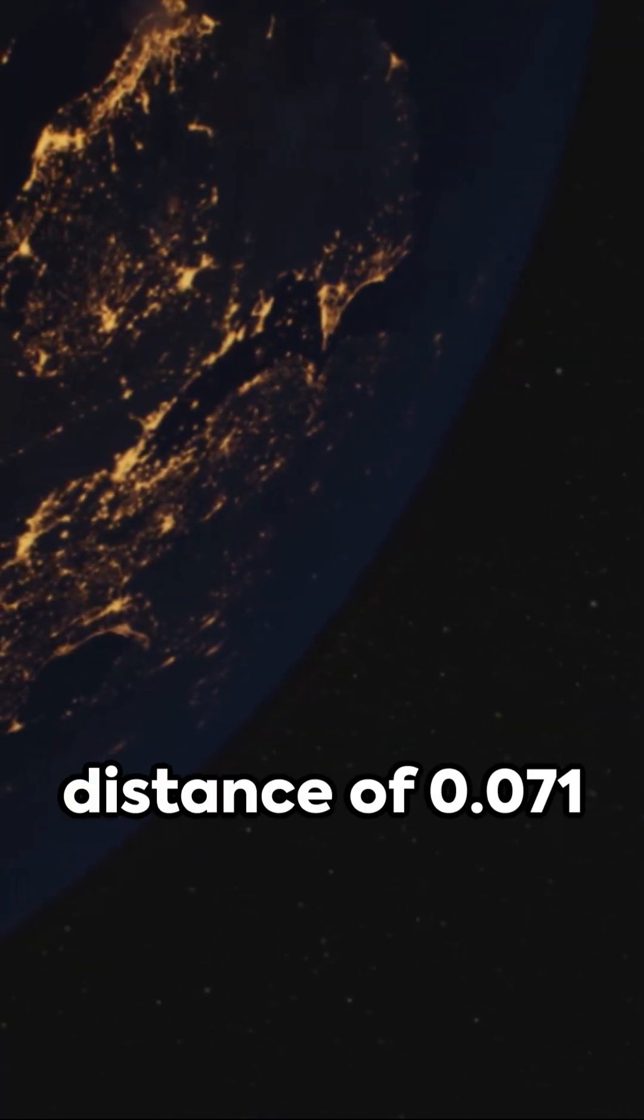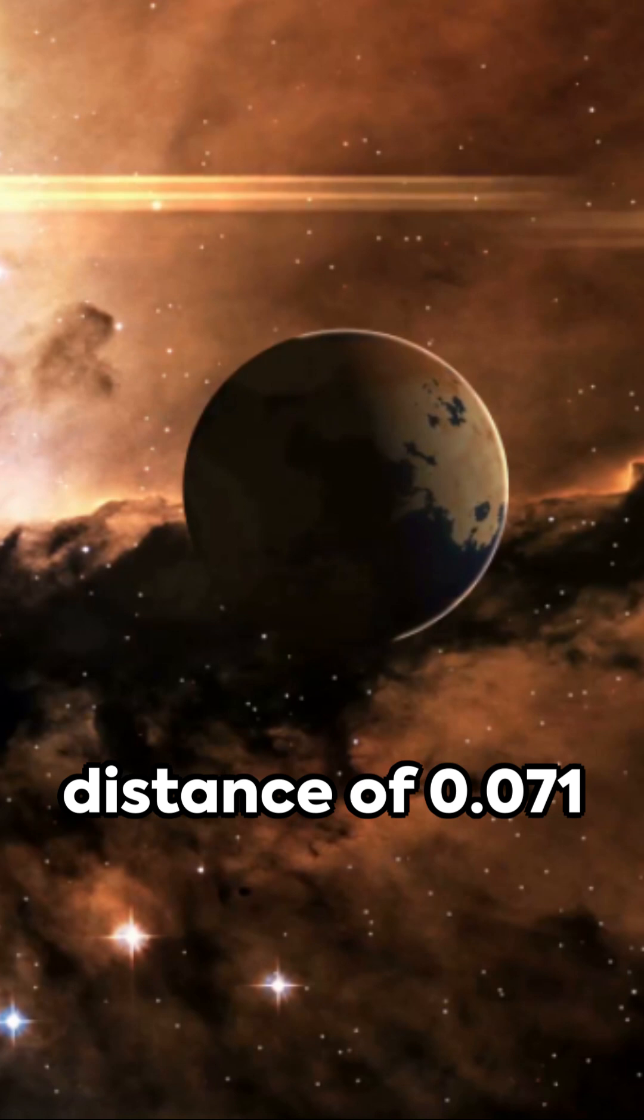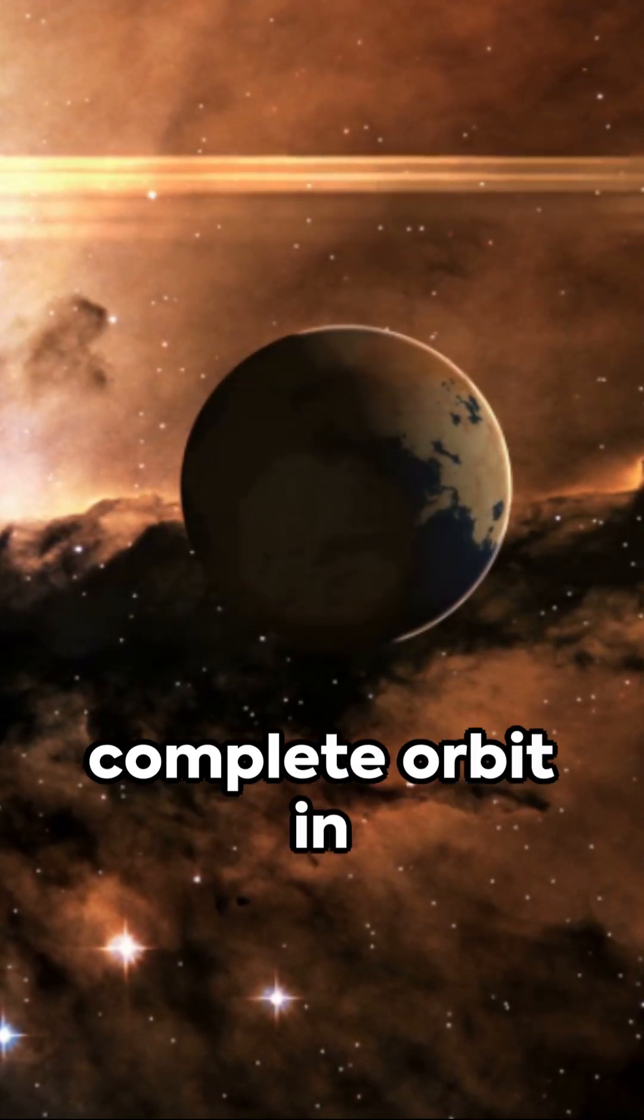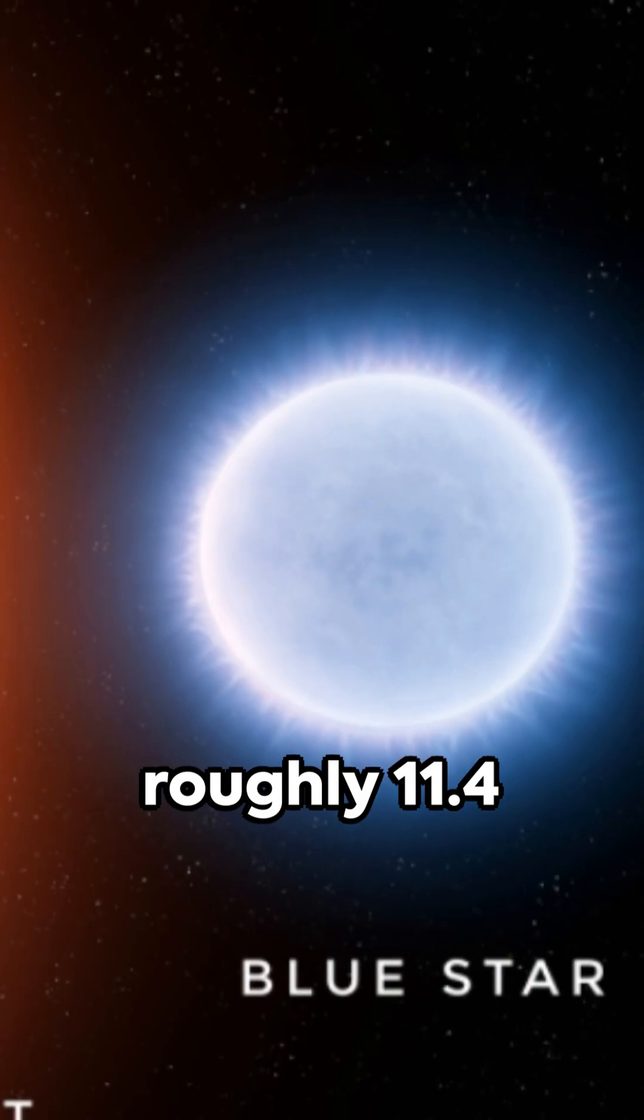The exoplanet orbits its star at a distance of 0.071 astronomical units, completing a complete orbit in roughly 11.4 days.